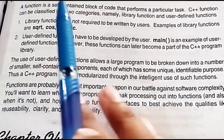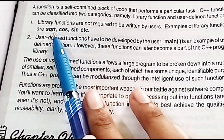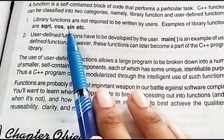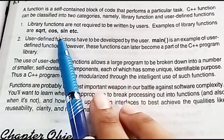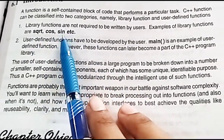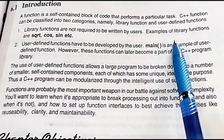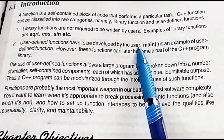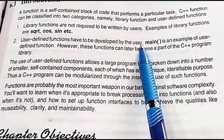Examples of library functions include square root and cosine, which are all present in the header file math.h. The main function is an example of a user-defined function.